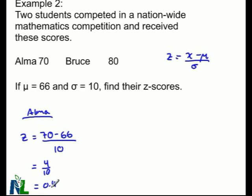This tells me two things. Alma is less than one standard deviation above the mean, and she's above because it's a positive 0.4. Positive values indicate locations above the mean in the standardized normal distribution.